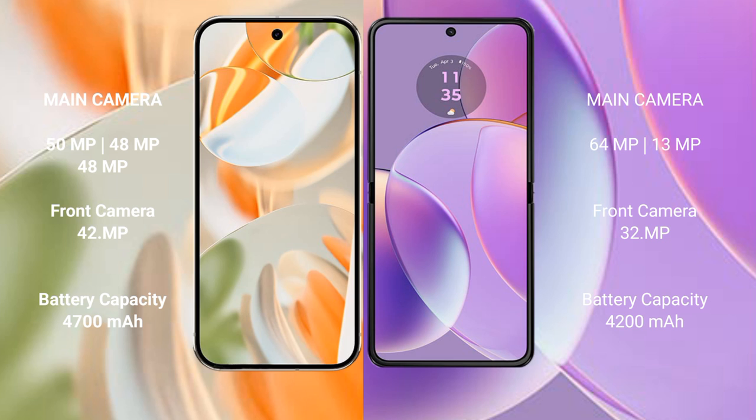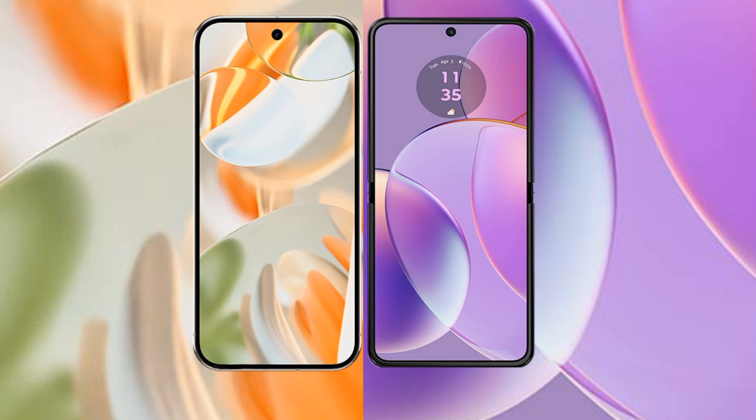The Google Pixel 9 Pro has a 4700mAh battery with 27W fast charging support. The Motorola G40 has a 4200mAh battery with 30W fast charging support.